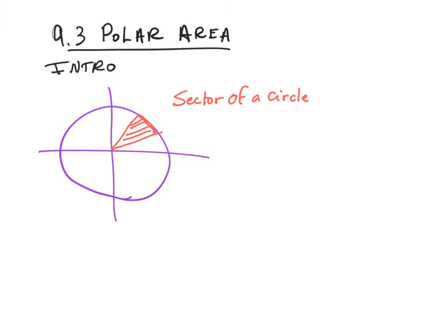This is 9.3 Polar Area, and we're going to do a little intro which is not in your note packet, but I want you to get a concept for what's going on here. We're going to find polar areas of different shapes — some of those graphs you looked at previously — but I'm going to start with the circle. If I take the area of a sector, from geometry, this is going to be one-half r squared theta. So if I can find theta and my radius, say r equals 3, I should be able to find the area of that sector.